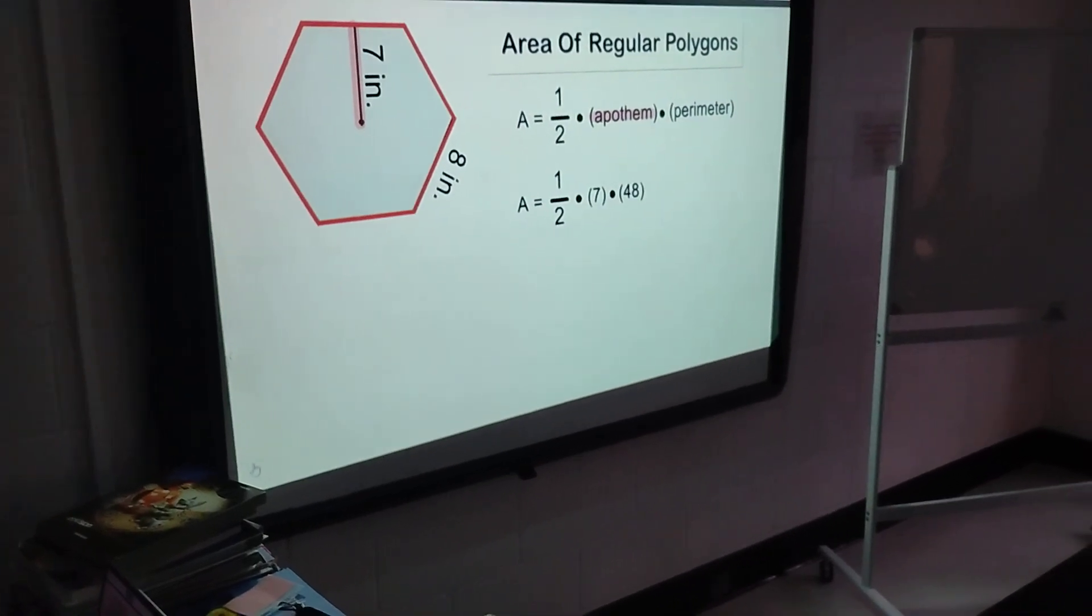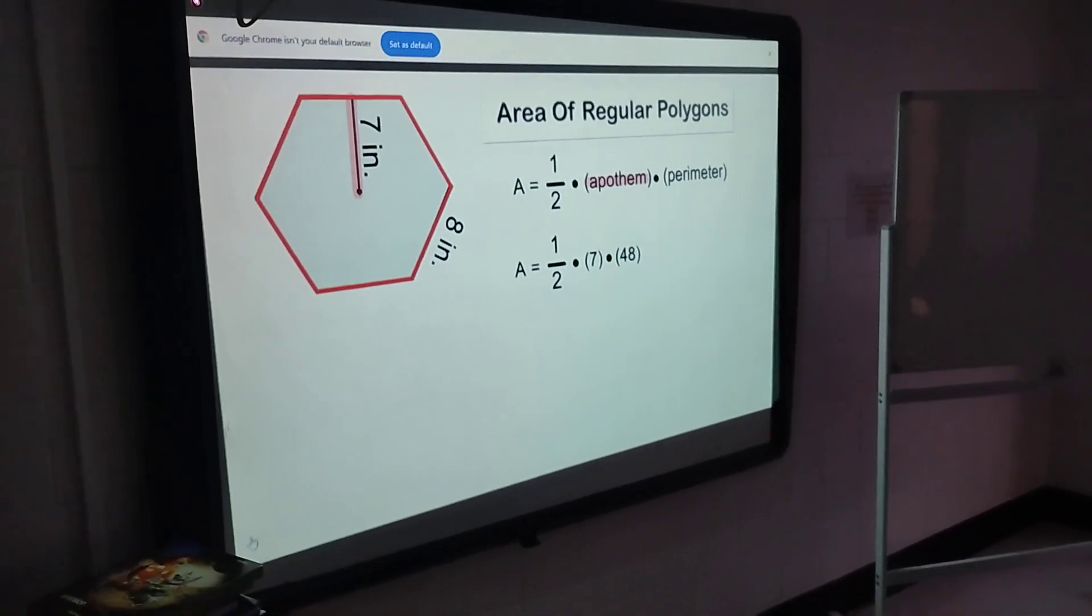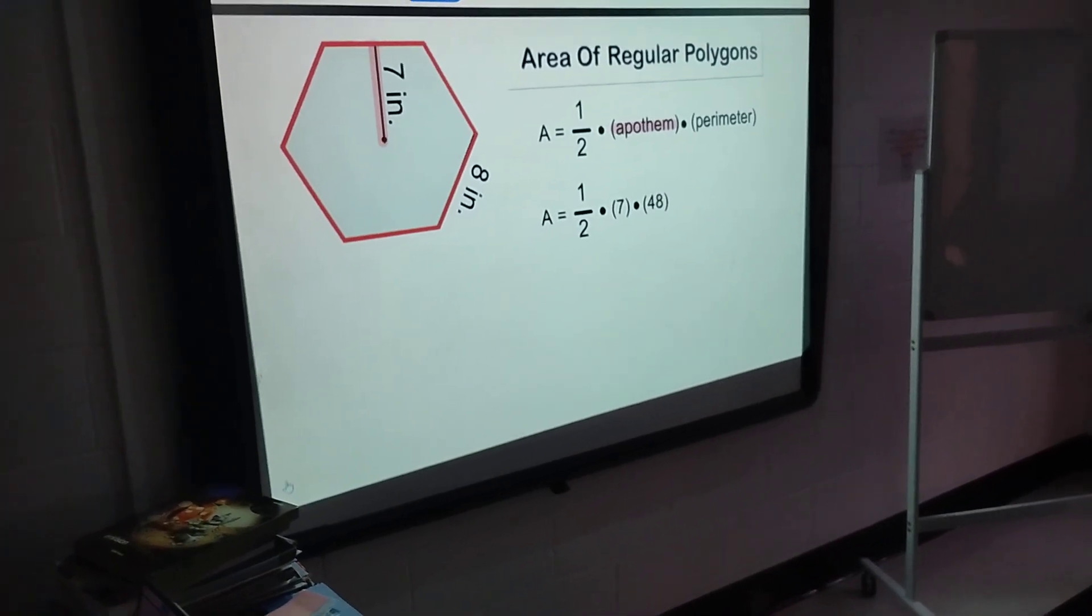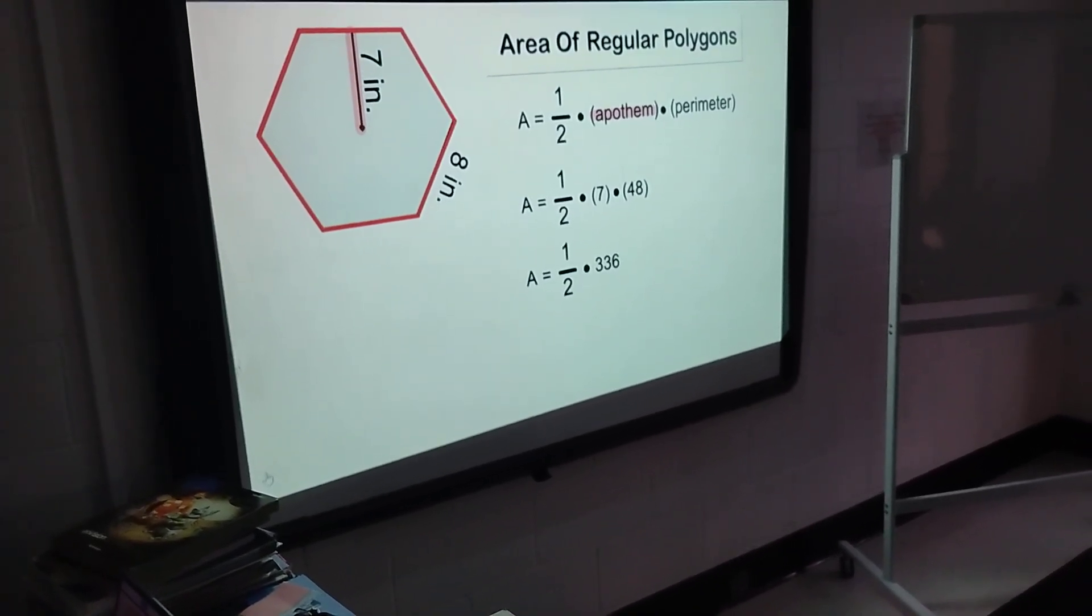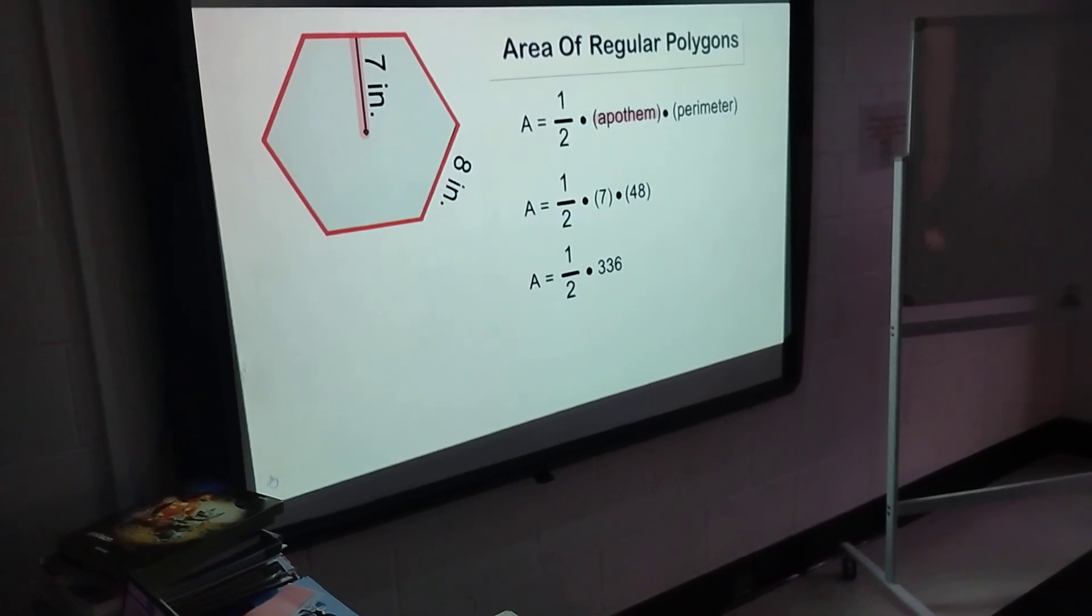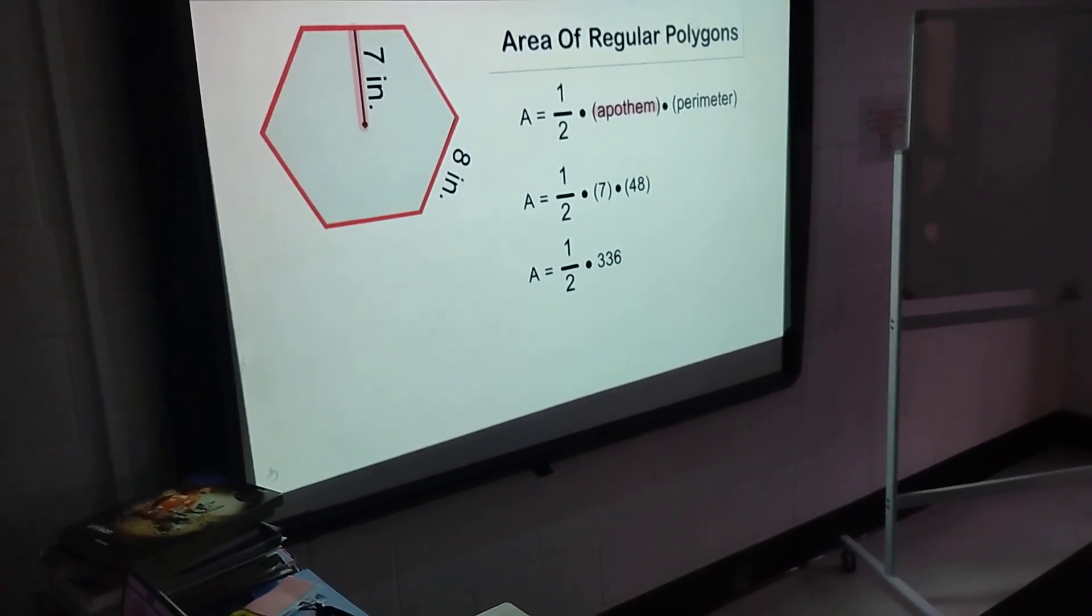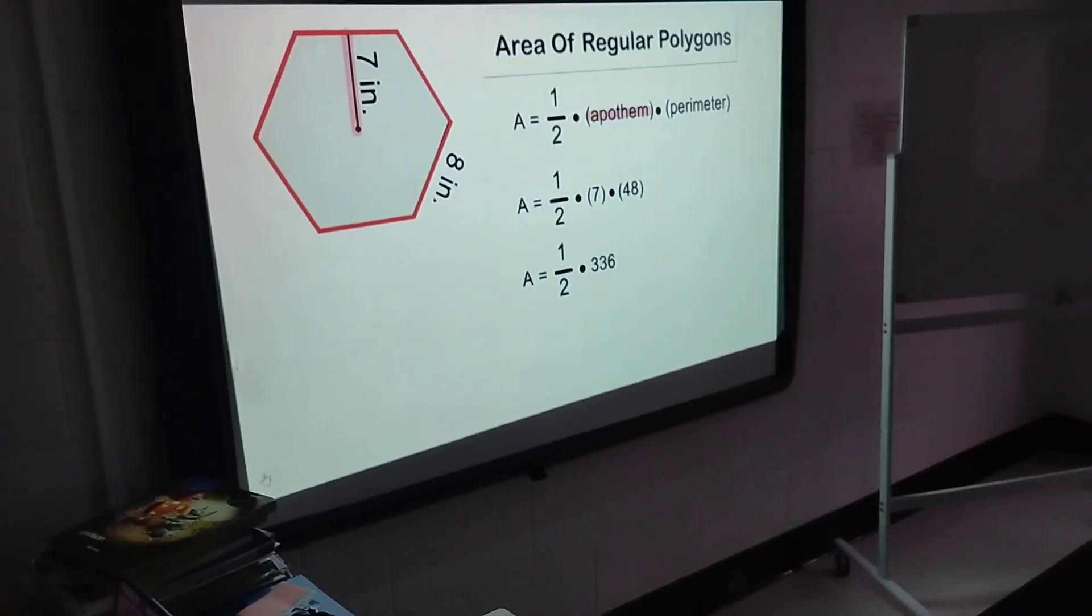After multiplying 7 by 48, we get 336. Now we have to figure out what one-half of 336 is.